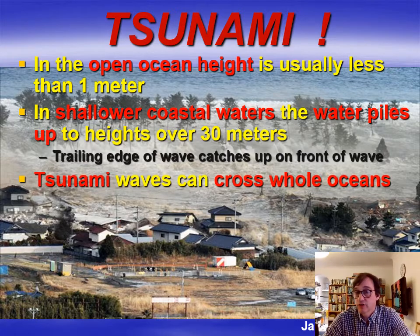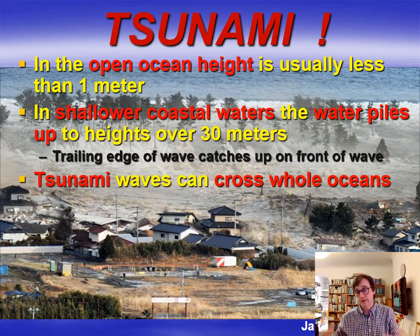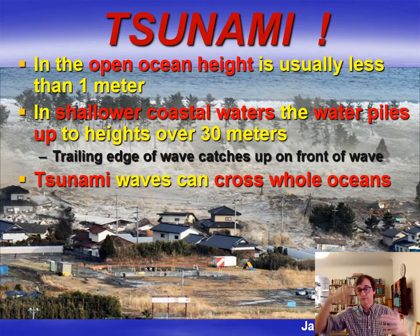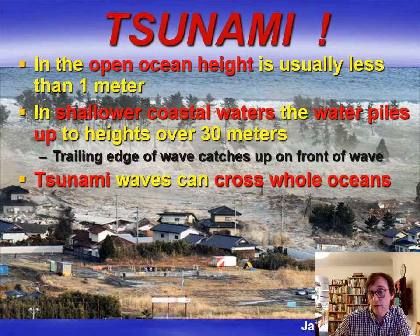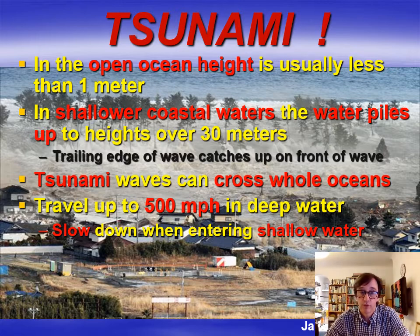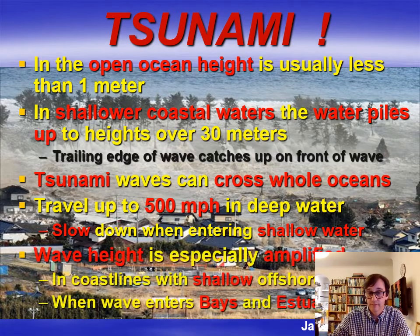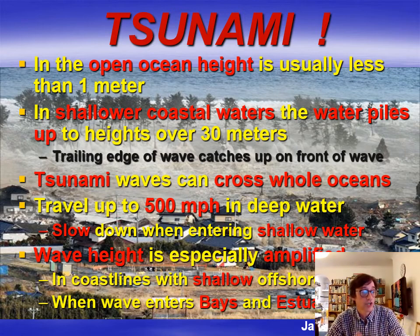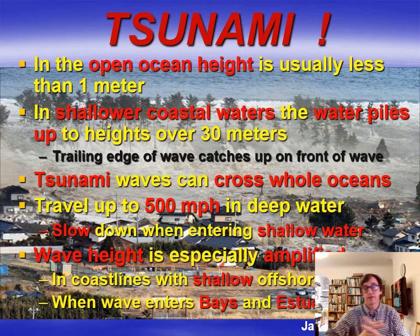Tsunami waves themselves can cross the whole ocean. They're usually created at subduction zones — usually from subduction zone earthquakes or landslides, which are generally on the edge of the continental shelf. The tsunami wave will go in both directions — both to the near coast, but also right across into deeper water and across an ocean basin, at quite some velocity in deep water — several hundred miles an hour. Travel up to 500 miles per hour in deep water, slow down when entering shallow water. The wave height is especially amplified in coastlines with shallow offshore gradients — where you have a very shallow gradient of the seabed with distance away from the coast, that will amplify that wave and make it much bigger.